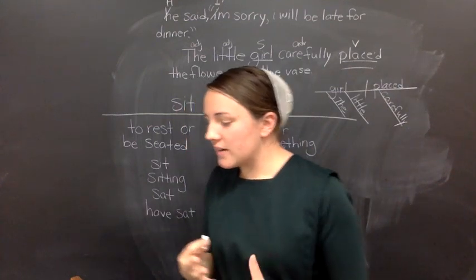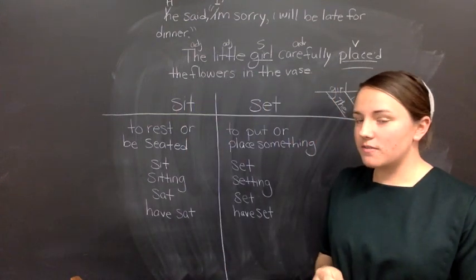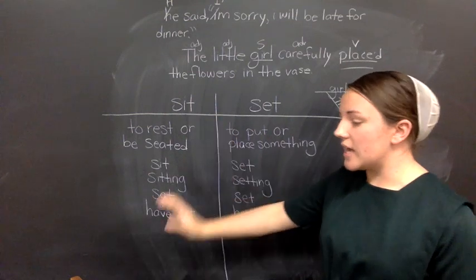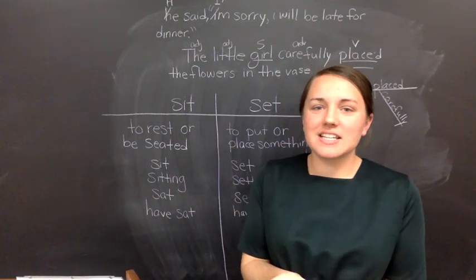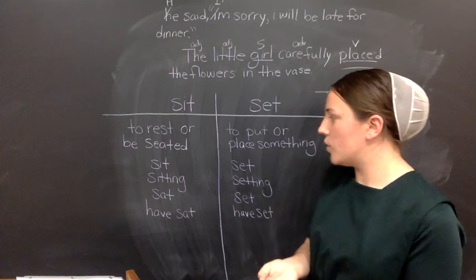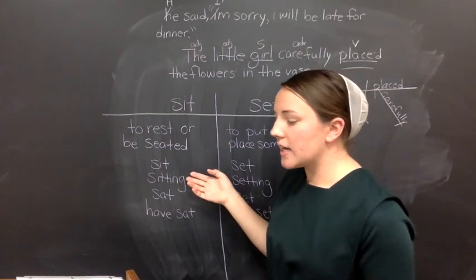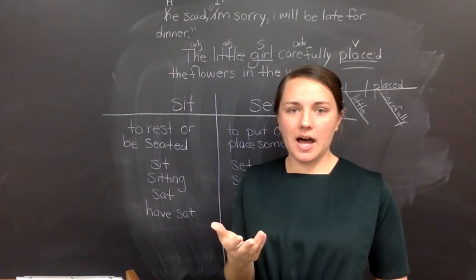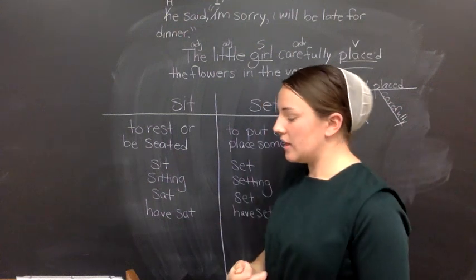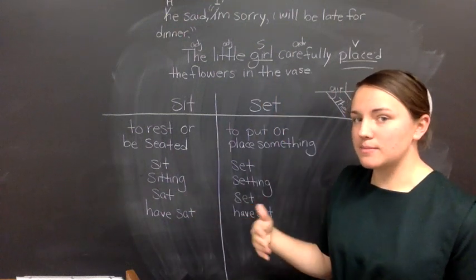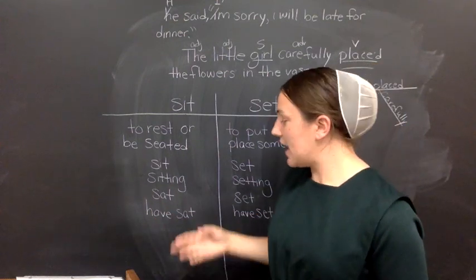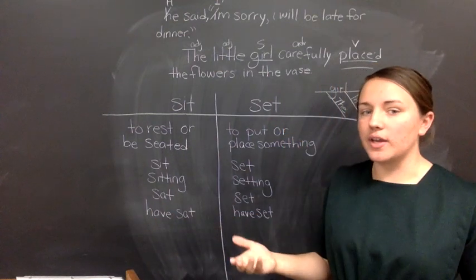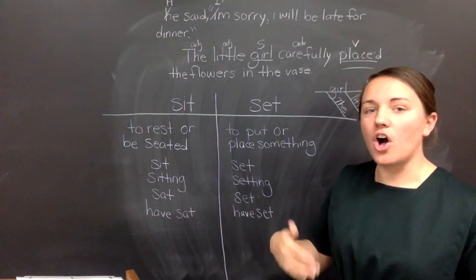So I'm going to give an example sentence here for each of them. For the word sit, you can say, Tim and I sit in the same row. Tim is sitting two seats behind me. He sat there last month also. That's the past form of sit. He has sat there all year. Or, we have sat there all year.